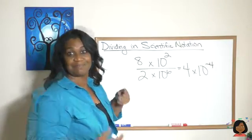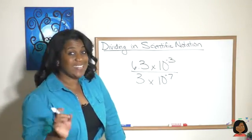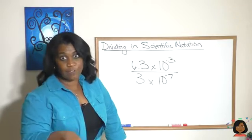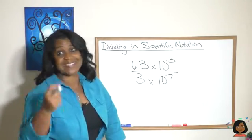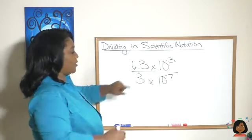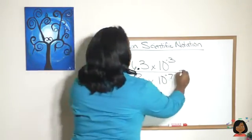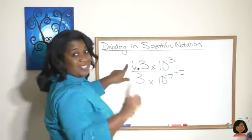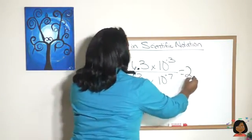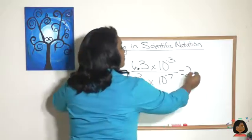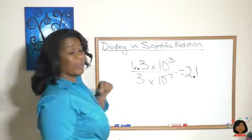What happens if we have negative exponents? You've heard me say it before: the process is still the same. Let's divide 6.3 divided by 3. That's going to be 2.1. So again, we're still dividing our whole numbers, but we are subtracting our exponents.